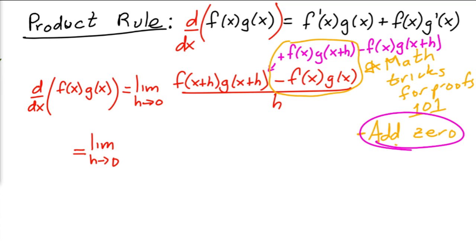f(x) and you would have left over g(x+h) minus g(x) all over h. So that's combining these two when you factor out the f(x).